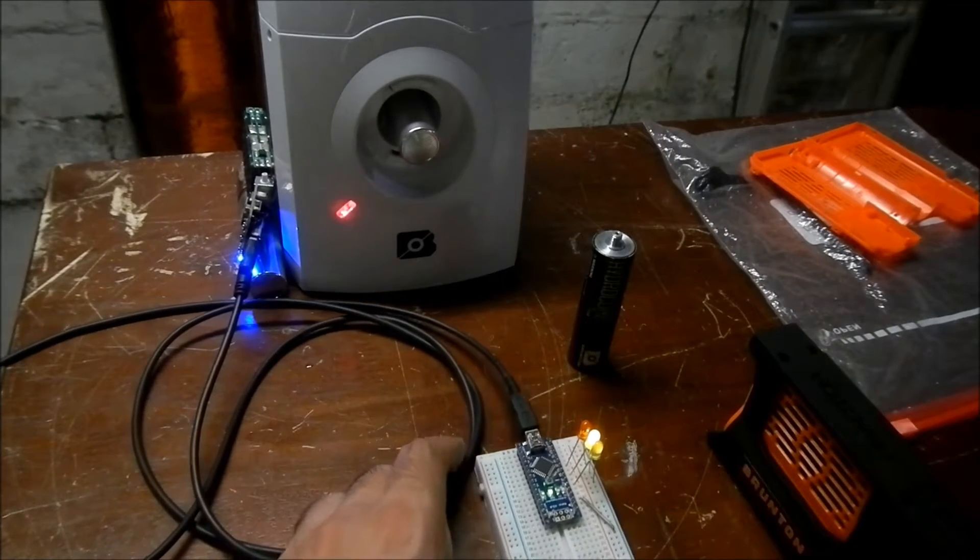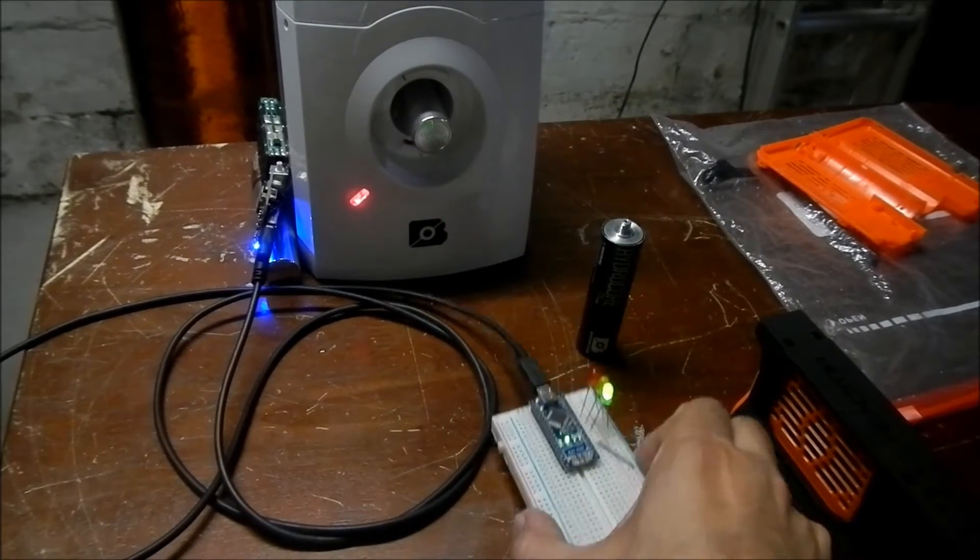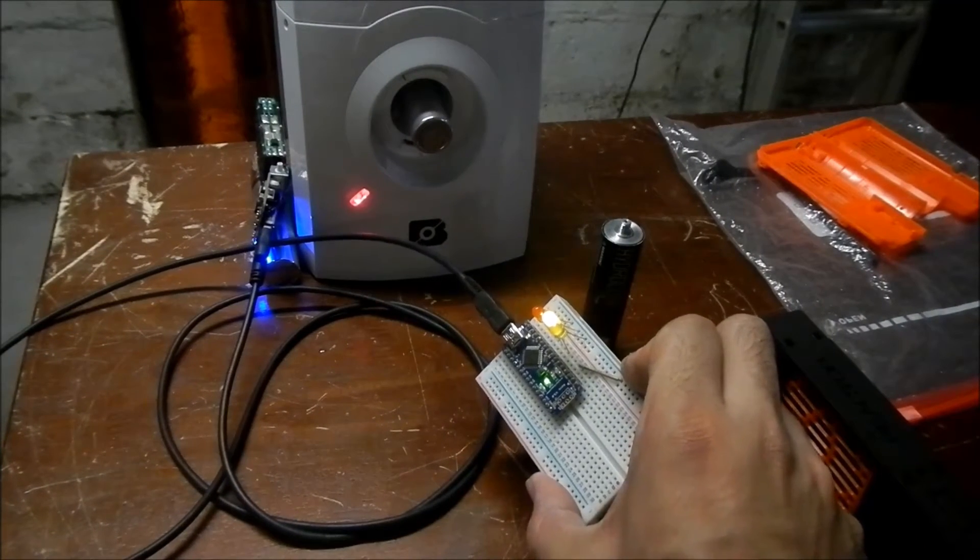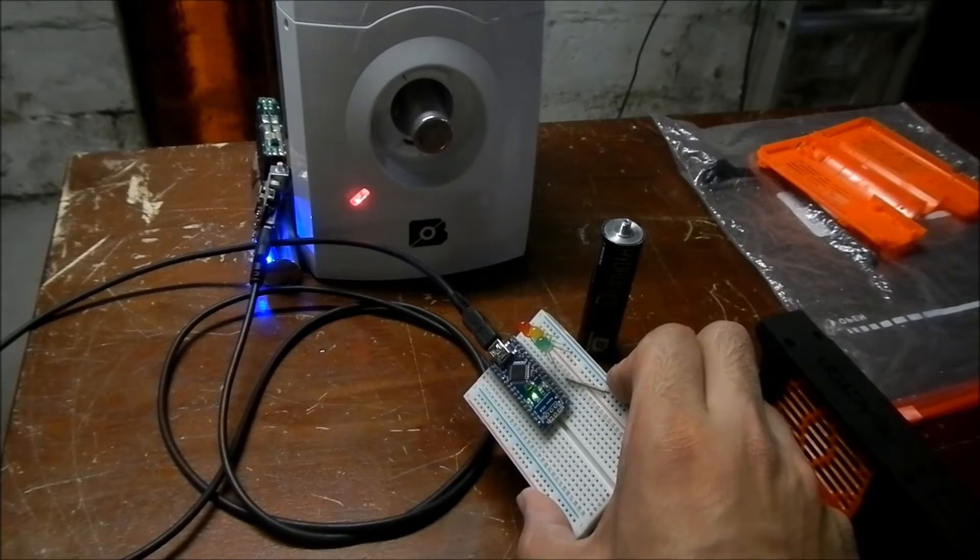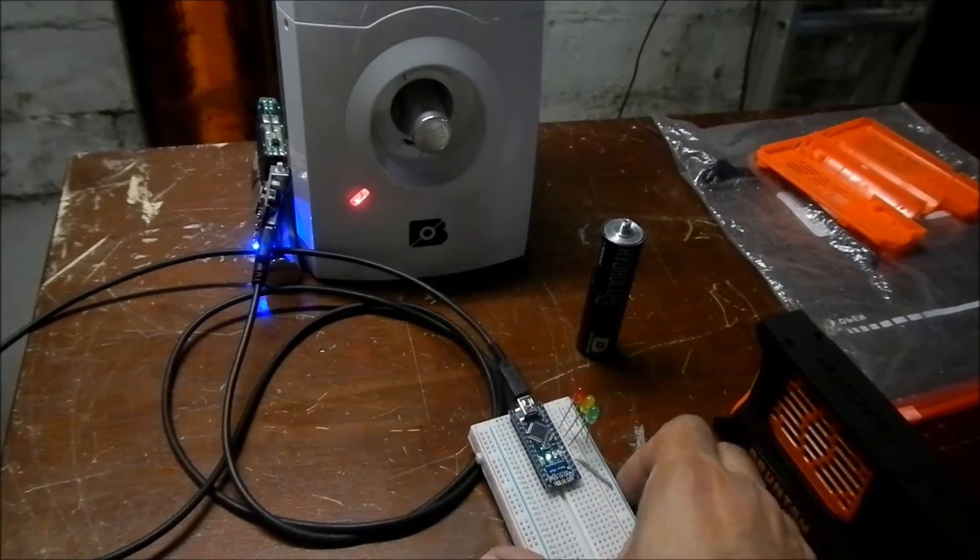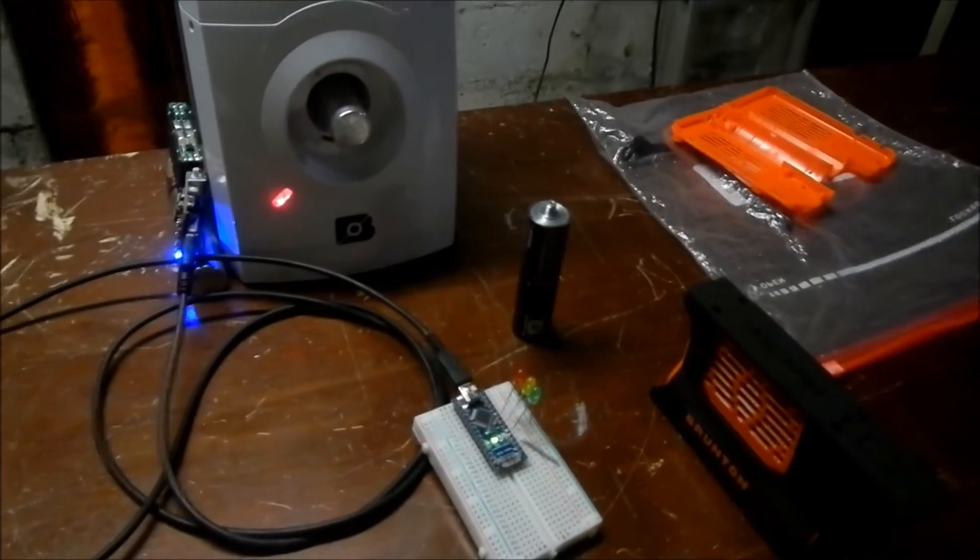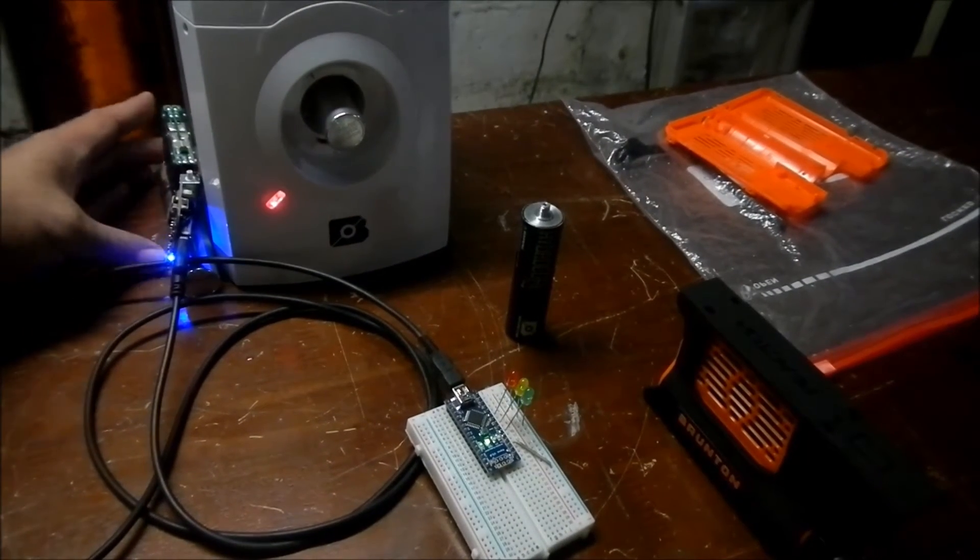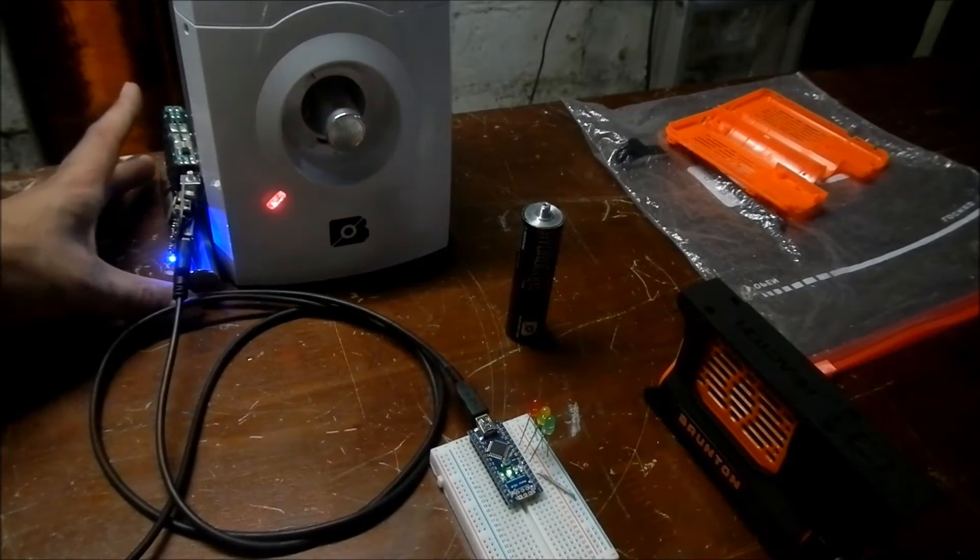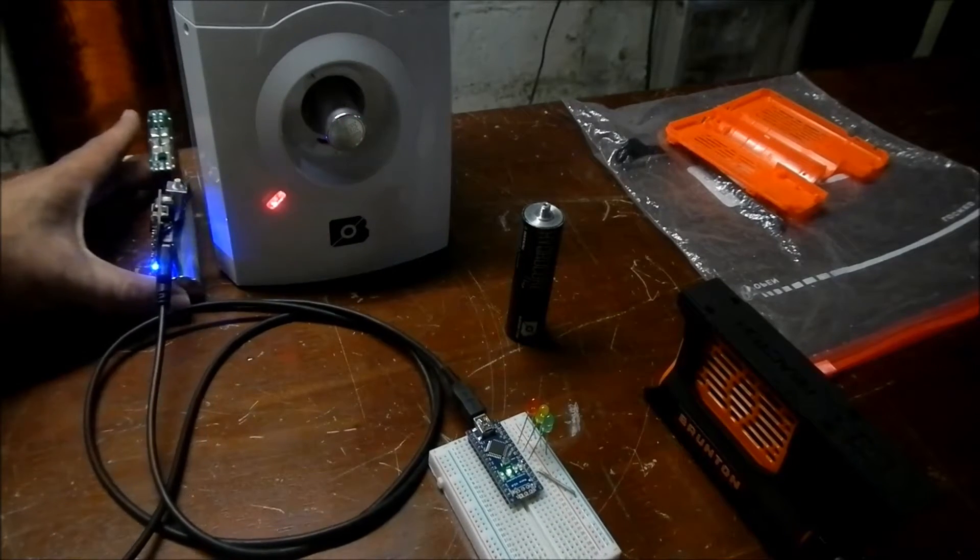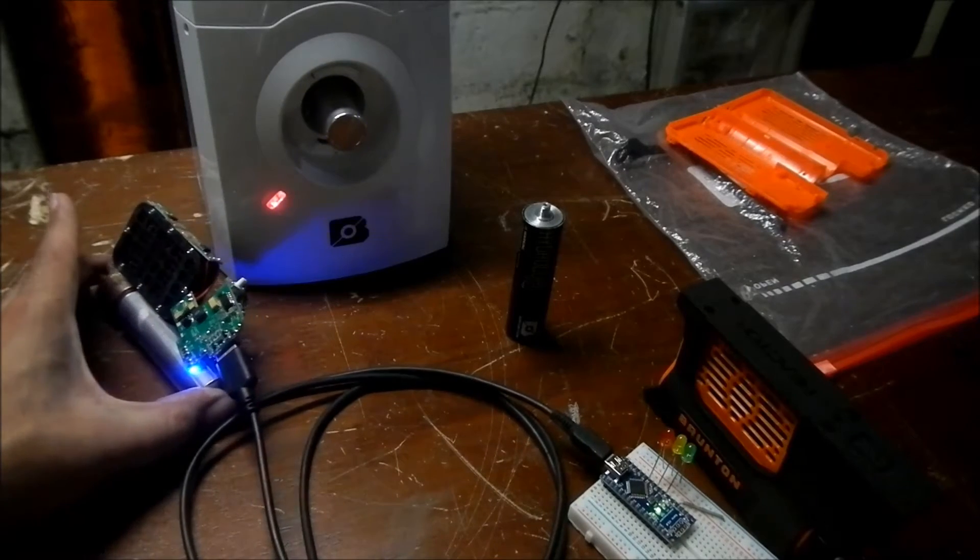There we go, we have our fuel cell powering our little Arduino circuit. It's been programmed to illuminate some LEDs. Once you get this fuel cell up and running, it's good for about two days of powering this Arduino, so it does last a long time. But it is a little finicky depending on how well hydrogen is able to flow through that fuel cell.